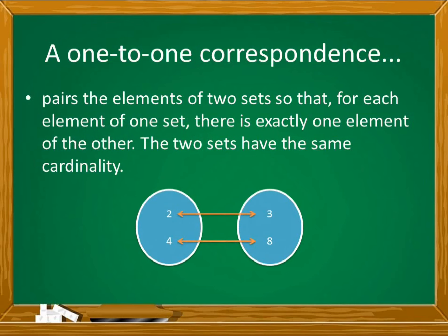Ibig sabihin, maaari mong i-pare o i-pares lahat ng mga elements na unang set sa ikalawang set. Dahil pareho sila ng bilang ng elements, there is a one-to-one correspondence o pairing.